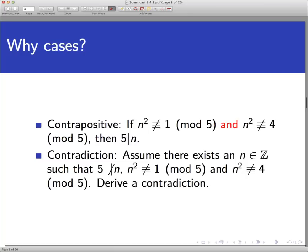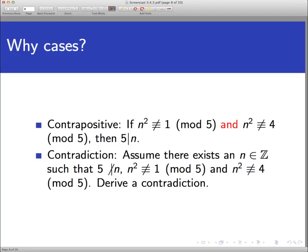A proof by contradiction would involve assuming three things: 5 does not divide n, n squared is not congruent to 1 mod 5, and n squared is not congruent to 4 mod 5. That's a lot of information, but all assumptions are phrased negatively, which isn't very informative. You could try contradiction — it might be a decent exercise. But actually, the cases come in when you attempt a direct proof. Proof by cases isn't really a different method; it's just a direction within direct proof.